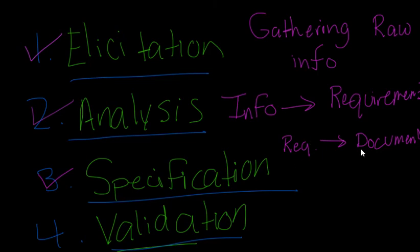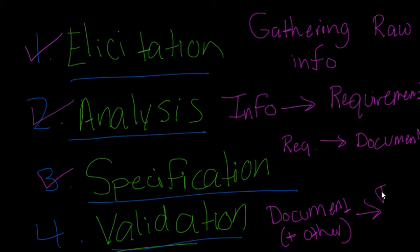And then our specification, we're going to take those requirements and we're going to make it into a document, so we're specifying those requirements in a formal documentation. And then the validation process we're taking that document plus other inputs such as the organizational knowledge and standards and we're turning that into our final requirements plus our actions. So not only are we saying what the problem is but we're also listing those agreed actions.